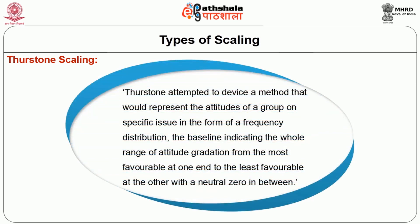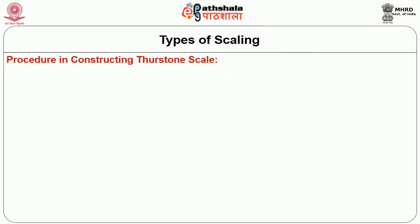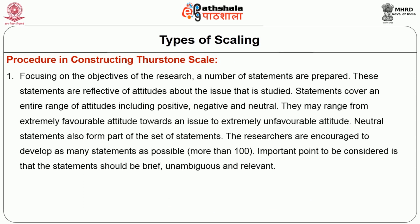In Thurston scaling, Thurston attempted to devise a method that would represent the attitudes of a group on a specific issue in the form of a frequency distribution — the baseline indicating the whole range of attitude gradation from the most favorable at one end to the least favorable at the other, with a natural zero in between. In constructing the Thurston scale, first, a number of statements reflective of attitudes are prepared, covering a full range including positive, negative, and neutral. Statements may range from extremely favorable to extremely unfavorable. The statements should be brief, unambiguous, and relevant.